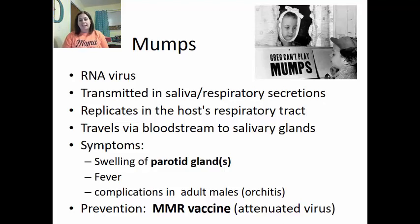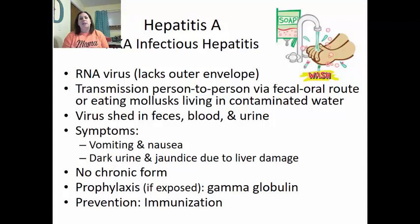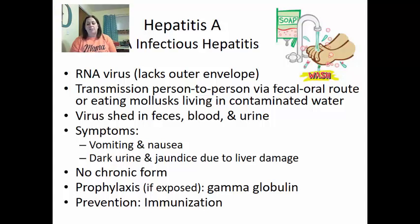Hepatitis A, also known as infectious hepatitis, is an RNA virus that lacks an outer envelope. Transmission is person-to-person through the fecal-oral route, or by eating mollusks living in contaminated water. The virus is shed in feces, blood, and urine. Symptoms include vomiting, nausea, dark urine, and jaundice due to liver damage — yellow pigment deposited into the skin. There is no chronic form of hepatitis A. Prophylaxis after exposure is gamma globulin, and prevention is immunization.